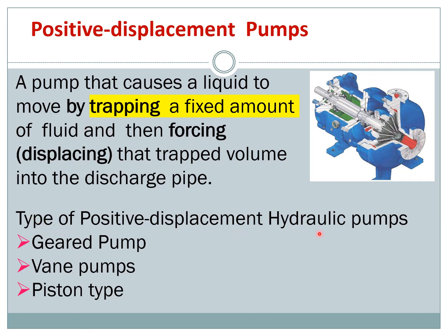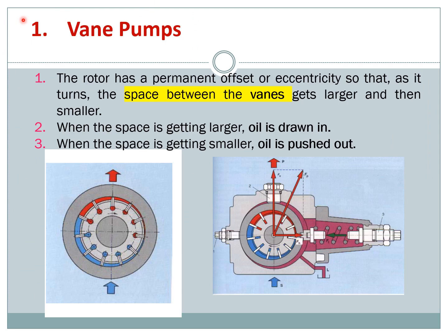There are three types of positive displacement hydraulic pumps: the gear pump, the vane pump, and the piston type pump. In the vane pump, the rotor has a permanent offset so that when it turns, the space between the vanes changes. You can see there is a smaller space and a bigger space, and this space can change from larger to smaller repeatedly.